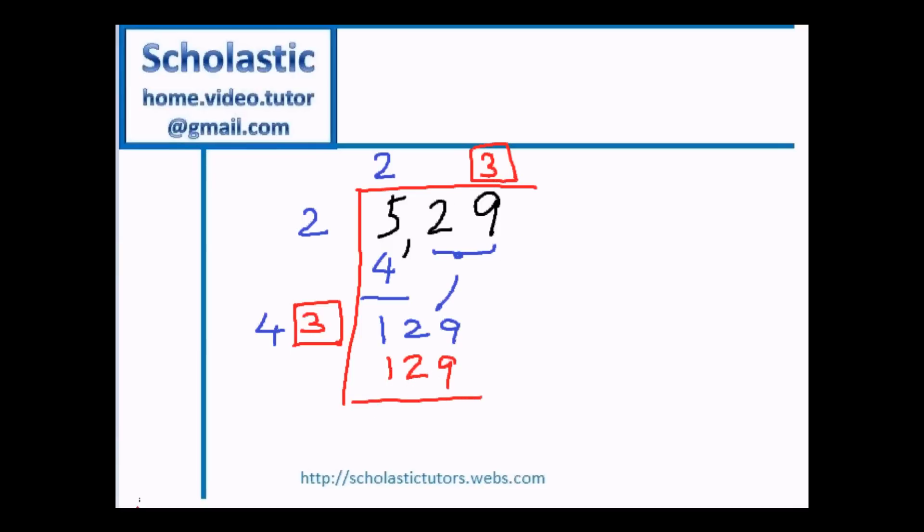And then you get a number which is actually 129, therefore no remainder here. So basically this is the answer. That means square root of 529 is equal to 23.